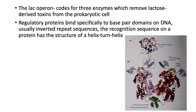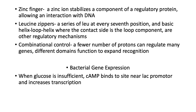The recognition sequence on a protein has the structure of a helix-turn-helix. This is an example of alpha helices involved in tetramer formation, with abrupt turns that relate to specific functions of the molecule, including recognition helices. A zinc finger is an example where a zinc ion stabilizes a component of a regulatory protein, allowing an interaction with DNA. We also have leucine zippers, which are a series of leucines at every seventh position.